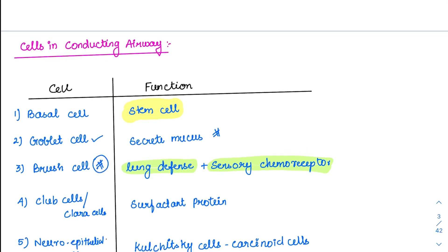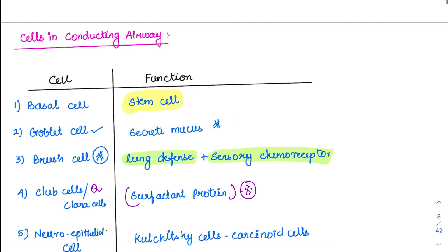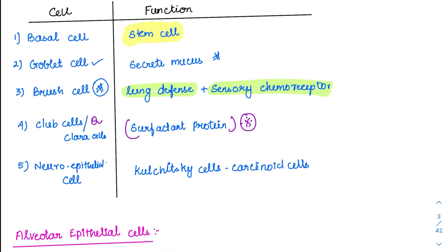Coming to the most important cell, also called an MCQ cell: the club cells, or clara cells. Previously called clara cells, now called club cells. These are involved in secretion of an important protein — the surfactant protein. Remember, clara cells are the ones which produce the surfactant protein. Then the final cells are the neuroepithelial cells, also called Kultschitzky cells, which are involved in carcinoid tumors.